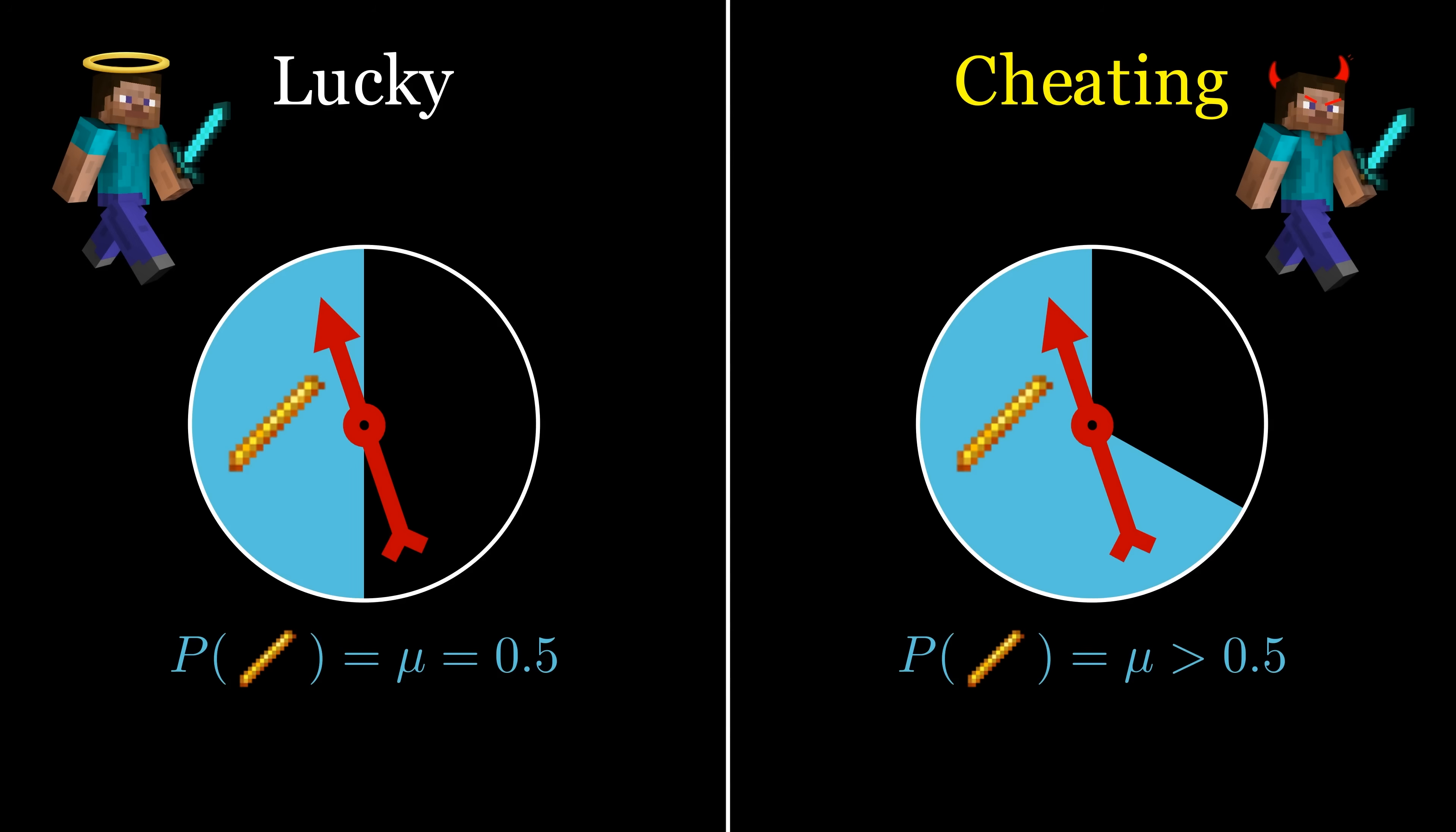So now, we can express both our hypotheses in terms of mu. If our friend got lucky, then mu equals 0.5. If they cheated, then mu is greater than 0.5.